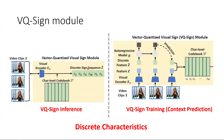The VQ-Sign module facilitates the conversion of signed videos into a sequence of discrete character-level signed tokens. It consists of a discrete character-level signed codebook. The input video clip is encoded into features, which are then used to retrieve the appropriate character-level tokens from the codebook. To optimize this codebook, we employ a self-supervised context prediction task, which aims to recognize the future content in latent space based on the current information. Importantly, this allows us to learn discrete representations while eliminating the need for reconstructing the high-dimensional input video data.